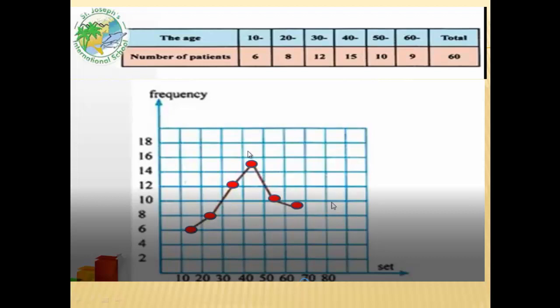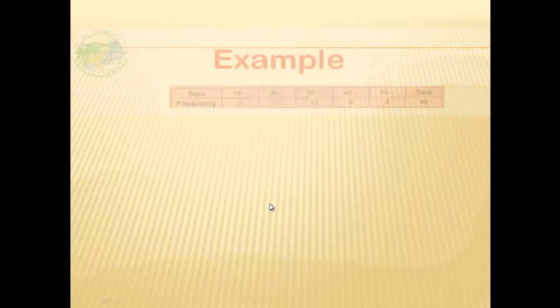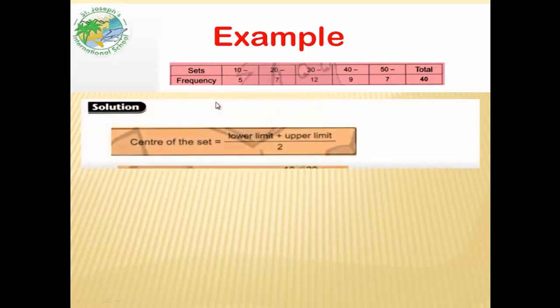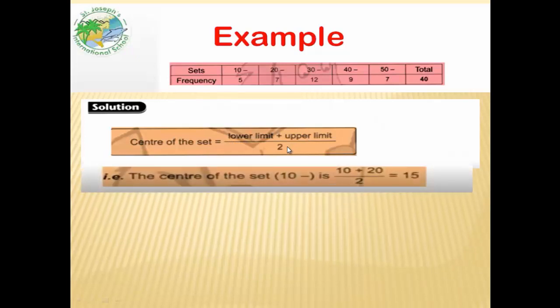After we finish, we determine these points should be connected together. See, in primary 6, the center of set equals lower limit plus upper limit over 2. The center of 10 equals 10 plus 20 over 2 equals 15.